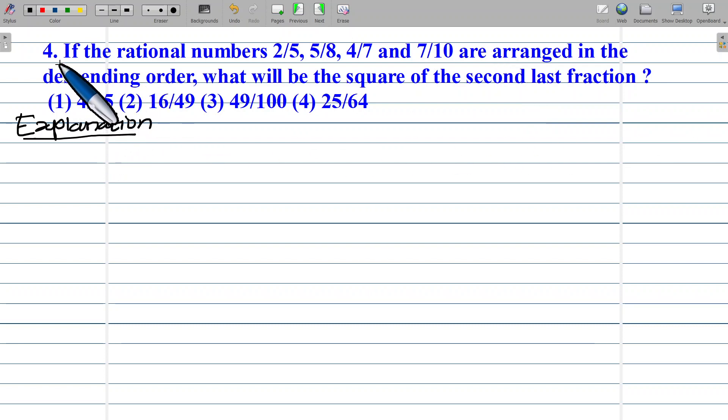Example number 4. If the rational numbers 2 upon 5, 5 upon 8, 4 upon 7, and 7 upon 10 are arranged in descending order, what will be the square of the second last fraction?